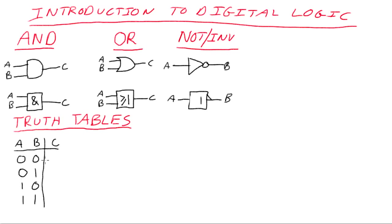The output is a function of the two inputs. For an AND gate, the output is true or 1 only if both A and B are 1. So: are A and B both 1? No — output is 0. Are both 1? No — output is 0. Are both 1? No — output is 0. Are both A and B 1? Yes! Bingo! And that is our truth table for the AND gate. The output C is only true if both A and B inputs are true. That's it.